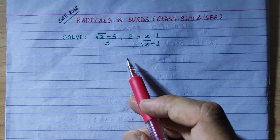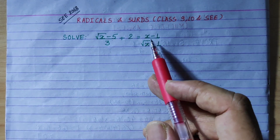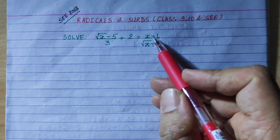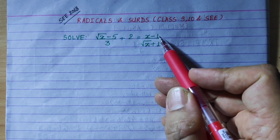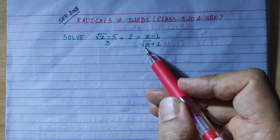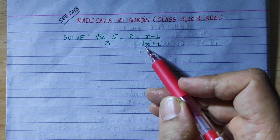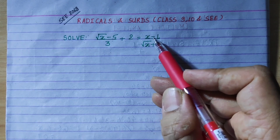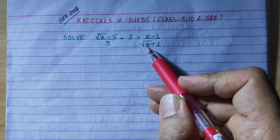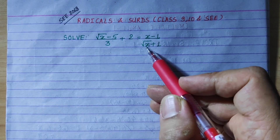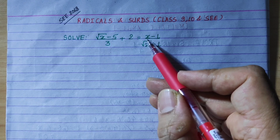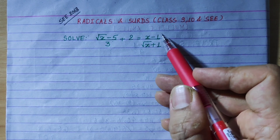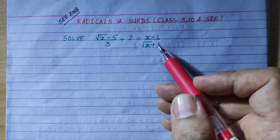Now, in this question, the numerator is x minus 1, and root (x plus 1) — we apply the a² minus b² identity. So x minus 1 is equal to root x squared minus 1 squared.